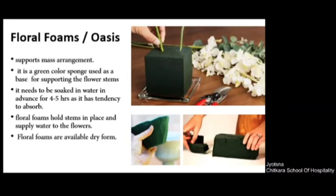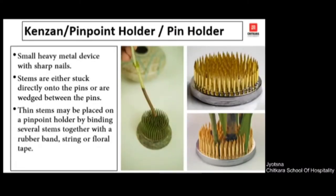Next is the kenzan, also called a pinpoint holder or pin holder. This is a metallic circular structure which has certain pins or nails on it. This is again used in flat arrangement — when you place a flower, as you can see in the picture, a single stem is inserted and fixed in between the nails. This way it holds the entire plant material in place in a flat arrangement.